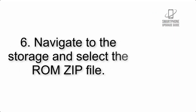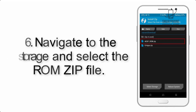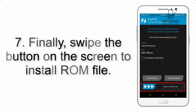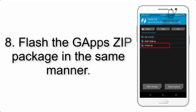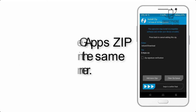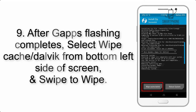Step 5: go back to the recovery main screen and tap on the Install button. Step 6: navigate to the storage and select the ROM zip file. Step 7: swipe the button on the screen to install the ROM file.